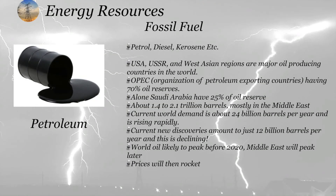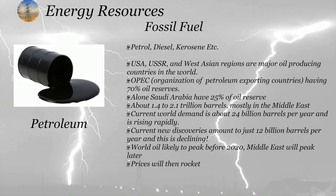Petroleum includes petrol, diesel, kerosene, and other products. What we get from the reservoir is only crude oil, and after distillation we get different types of oils like petrol, diesel, and kerosene. The main reservoirs are available in the USA, Russia, and West Asian regions.